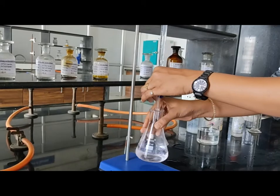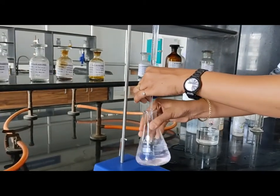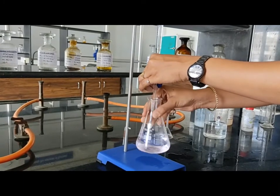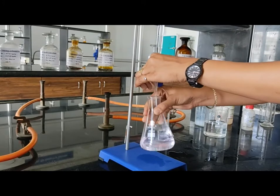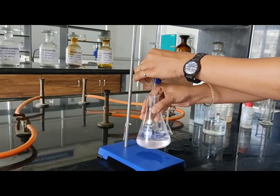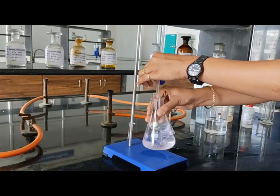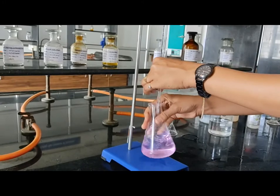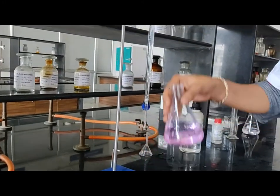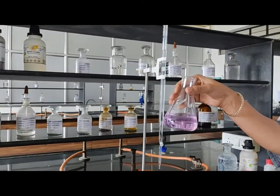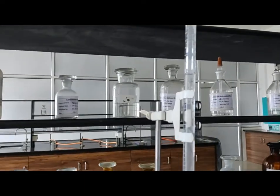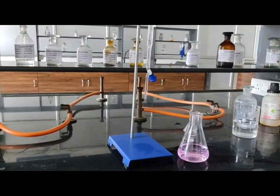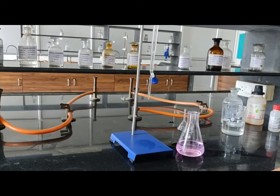During titration we have to continuously stir the conical flask so that the reaction occurs simultaneously and we get a clear and sharp endpoint. Now this titrate is converted from colorless to pink. This is our endpoint and our burette reading is 31.4. In a similar way we have to repeat the procedure three times, then calculate the mean and use that mean to find out the percent purity of the boric acid.